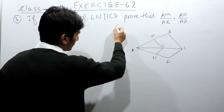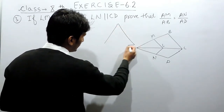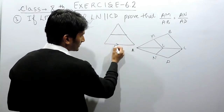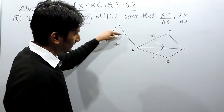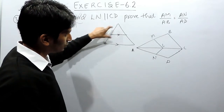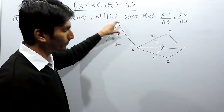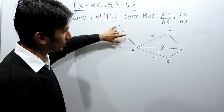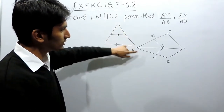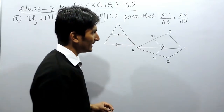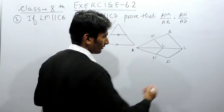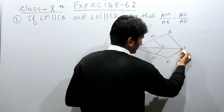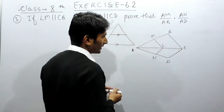According to the Basic Proportionality Theorem, in a triangle, if we draw a line parallel to the third side, that line must cut the other two sides in equal proportion — meaning the ratio between the two parts on one side must be equal to the ratio on the other side.